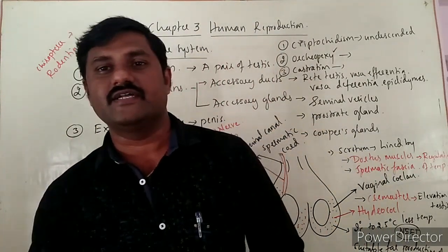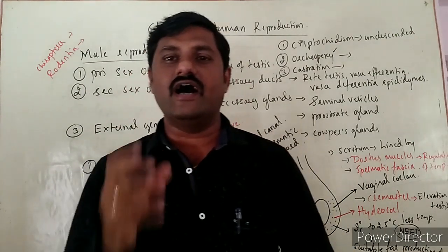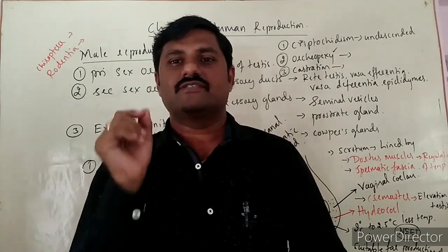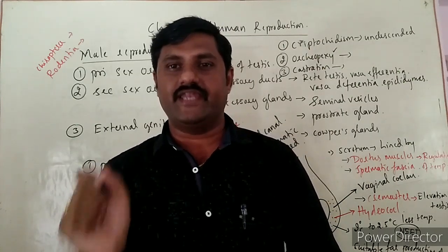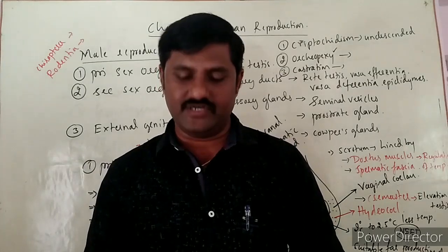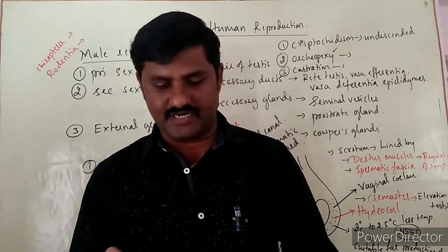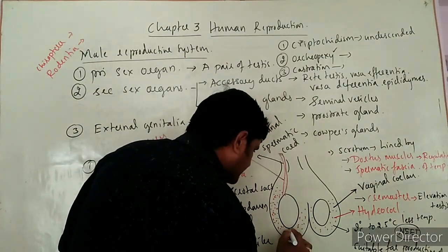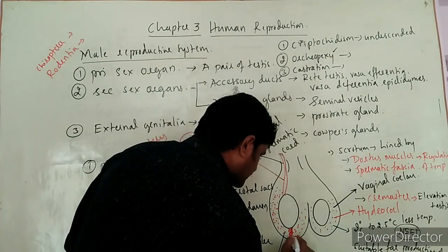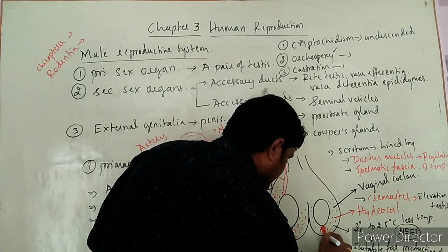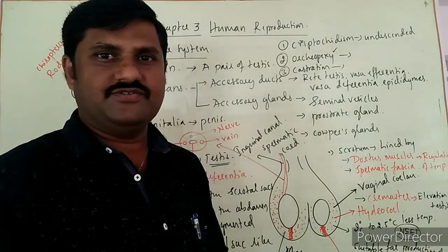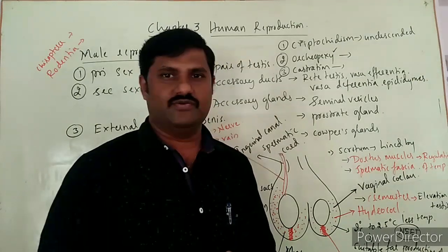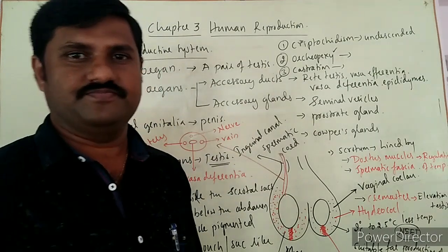In case of elephants, the testes are permanently present in the abdominal part only, which is why there are no scrotal sacs in elephants — the scrotal sacs are vestigial in elephants. The testes are also connected by a special structure called Gubernaculum, which keeps the testes in their respective area.